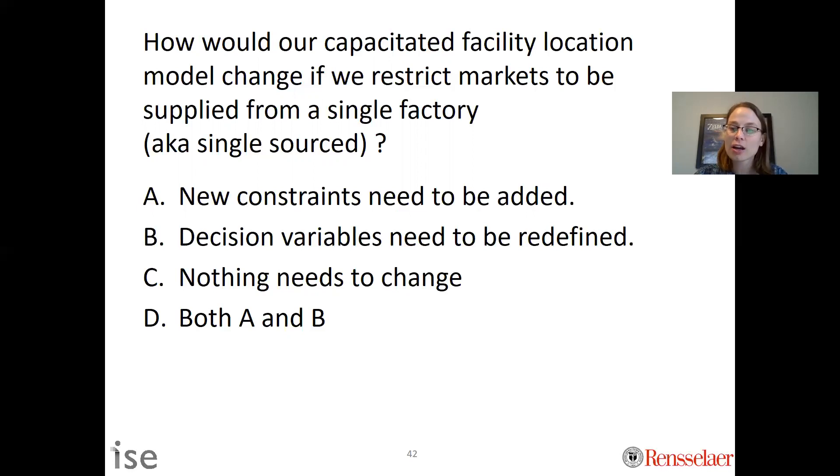Oftentimes this is something that happens because of the type of product you make. A manager may ask what does that cost me for having a single source? You could build an optimization model to answer that question. If you did, what would have to change in our capacitated facility location problem? The correct answer, at least from how I modeled the problem, would be D—we need to have new constraints and we need to redefine our decision variables. There's one thing to point out: oftentimes there's many ways to model the same problem.